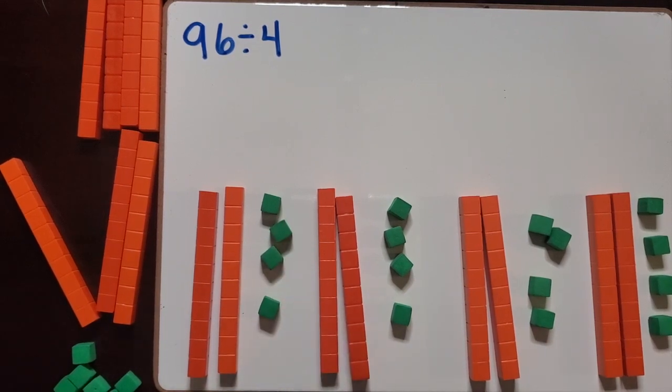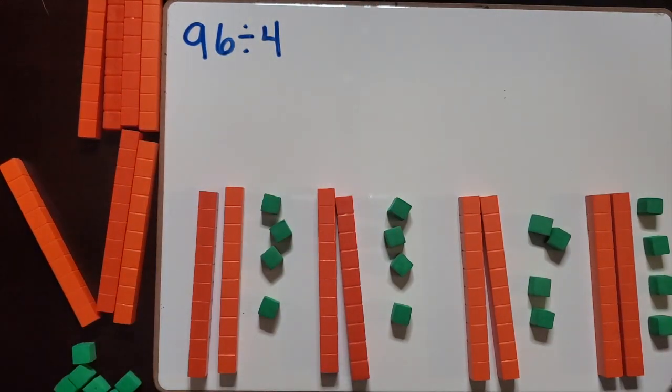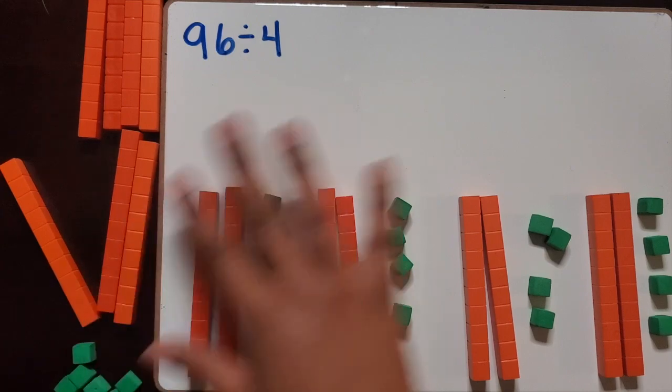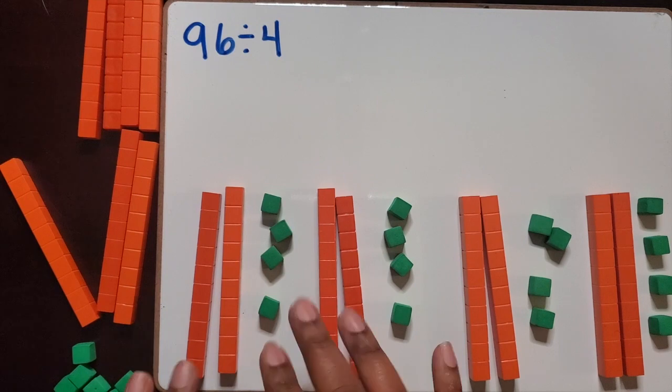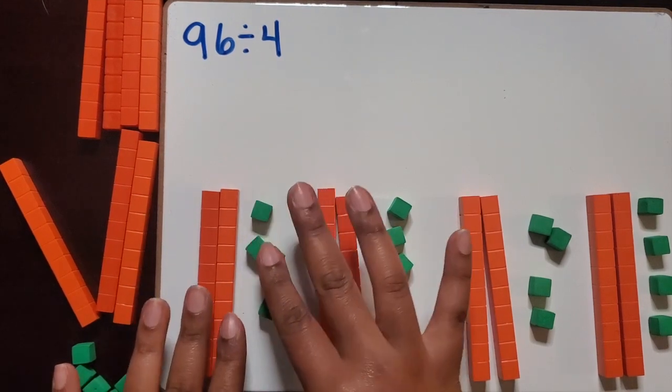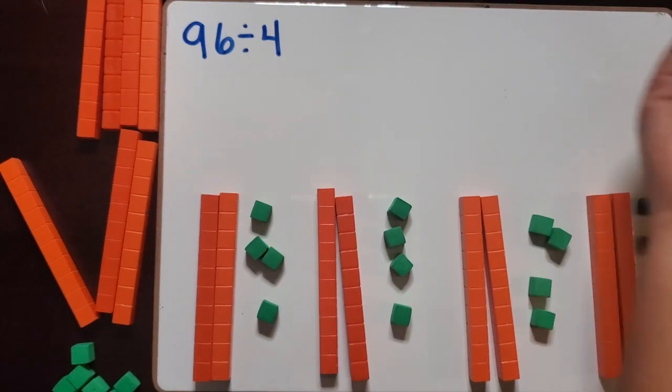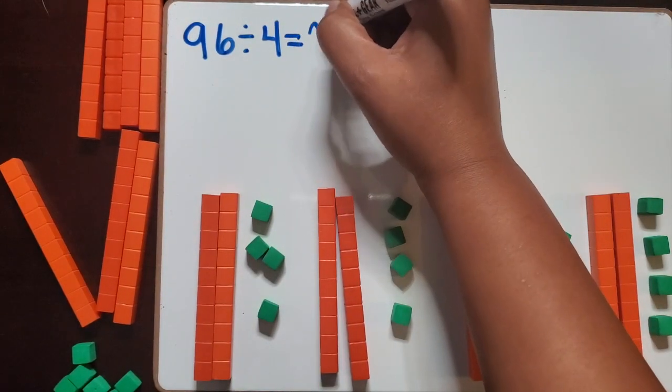So now you want your students to recognize when we're dividing, we want to find out the total amount that's in each group separately. We already know altogether that this is 96, but in each group, what is the total amount? Each group has a total of 24. So that is actually our quotient. 96 divided by four equals 24.